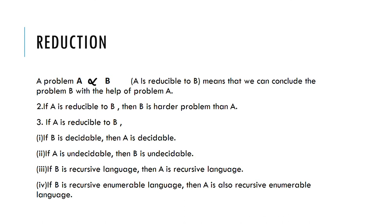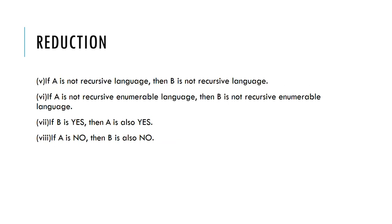Fourth, if B is a recursive enumerable language, then A is also a recursive enumerable language. Fifth, if A is not a recursive language, then B is also not a recursive language. Sixth, if A is not a recursive enumerable language, then B is also not a recursive enumerable language.